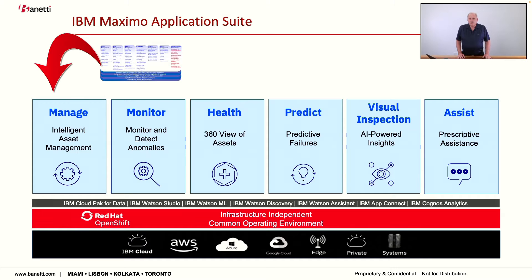Maximo was placed onto a common operating environment called Red Hat OpenShift — a containerized platform using Kubernetes technologies that provides a common interface to the operating environment. Building on top of IBM's Cloud Pak for Data, all of the individual capabilities developed over many years were put into containers and integrated on a common delivery platform, allowing customers to bring the right portions of the solution to bear as they journey toward predictive maintenance.